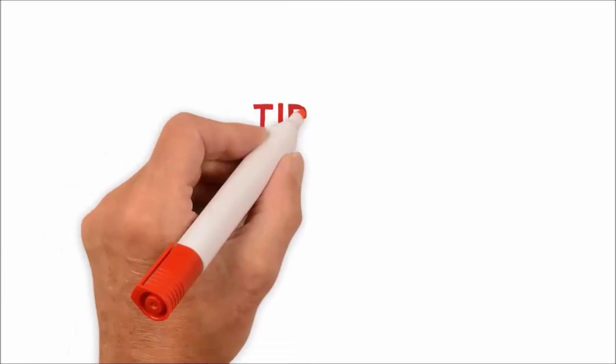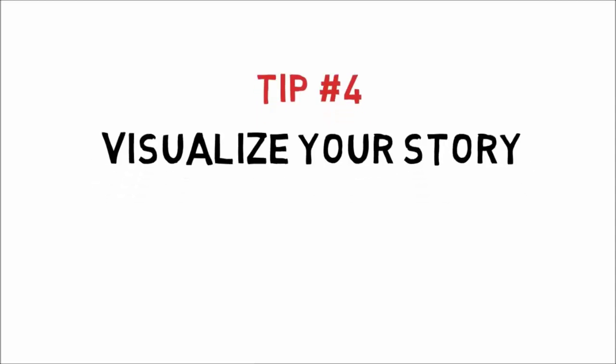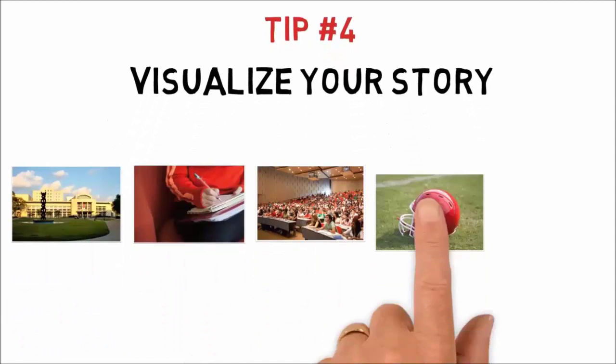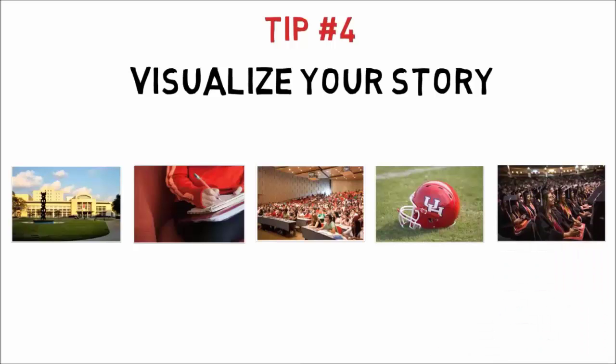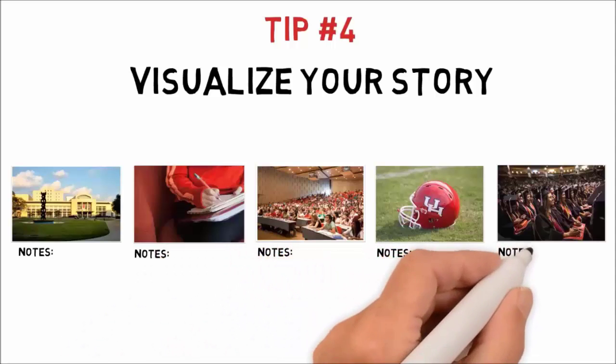Tip 4: Visualize your story. What you need to do is get the pictures related to your story, arrange and place them on a table, then write descriptions describing each of the pictures and how they relate to the story. This should help you in getting started with your draft.